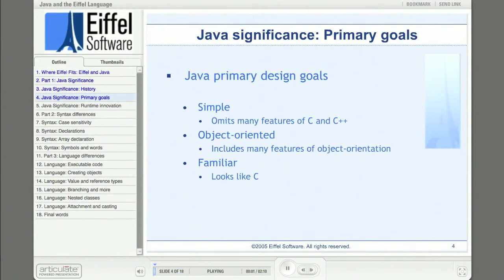Java as a whole has many technological goals, like distributed computing and multithreaded execution. But the Java language has some specific design goals. Three of Java's primary design goals are simplicity, object orientation, and familiarity. The remainder of this presentation may give you some perspective on how well these goals have been achieved.